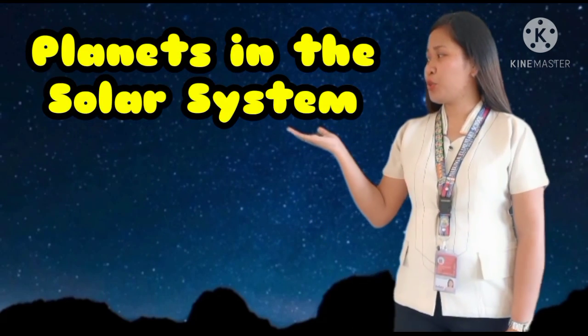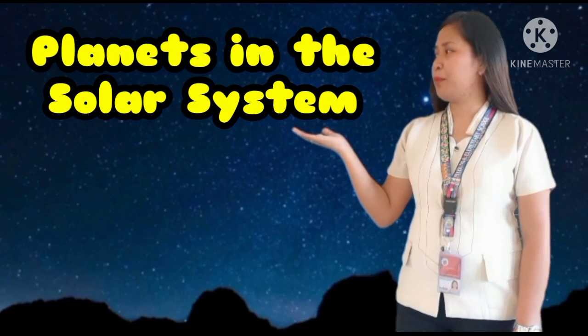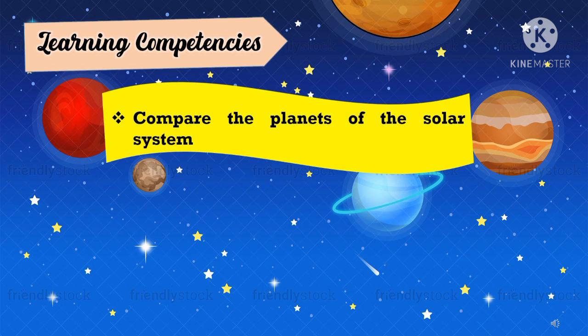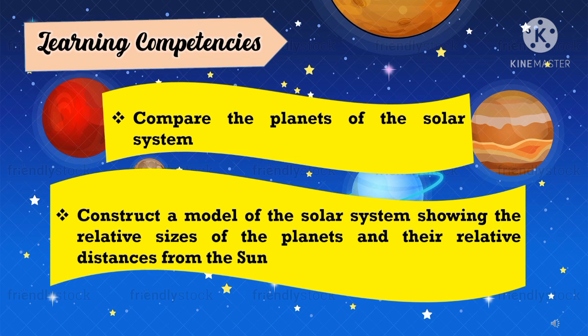Today, we are going to learn the planets in the solar system. Here are the learning competencies for today's lesson: Compare the planets of the solar system. Construct a model of the solar system showing the relative sizes of the planets and the relative distances from the sun.